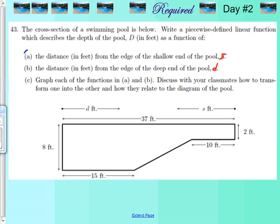We're going to start here for part A, and I would encourage you not even to consider part B yet. We're going to cross off part C because to do that it would take you 25 or 30 minutes just to do this one homework problem. So just focus on part A — the distance in feet from the edge of the shallow end of the pool.